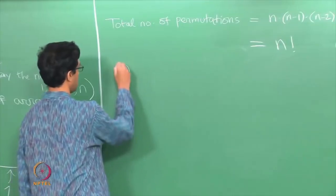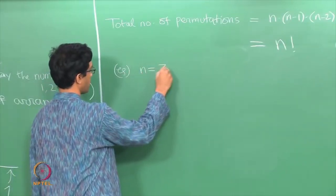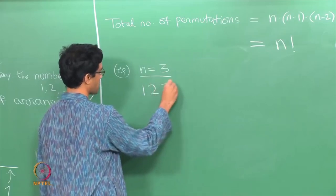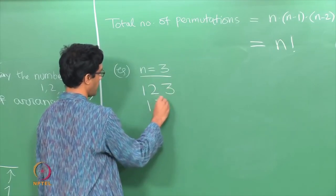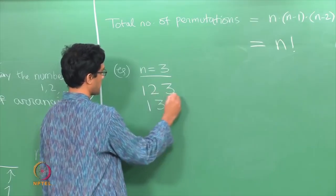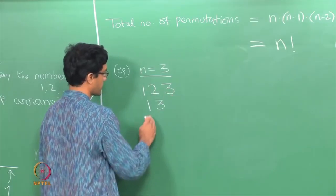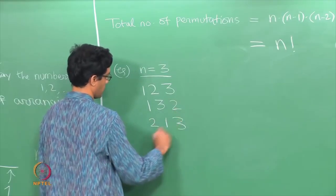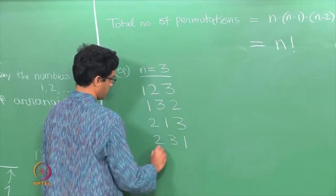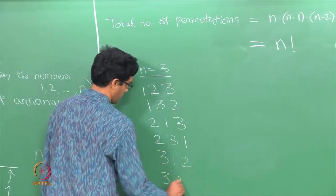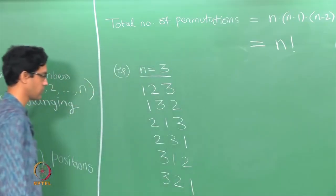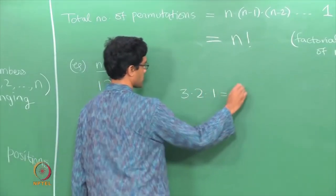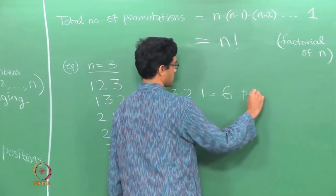For example, if you take n to be 3, you look at the numbers 1, 2, and 3, and the number of ways of arranging them in a line — there are 6 of them. So you have 1,2,3 then 1,3,2, and so on. That is the full list: there are 6 possibilities, which is 3 times 2 times 1, giving 6 permutations.